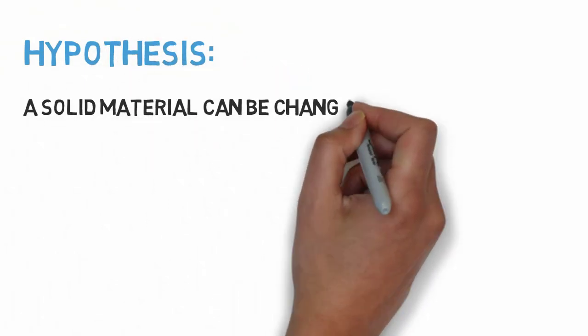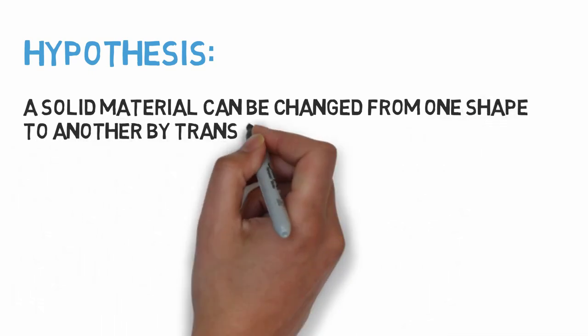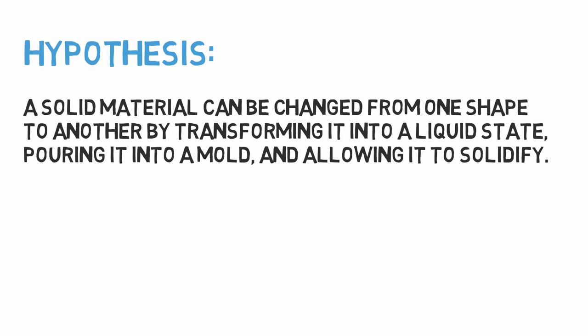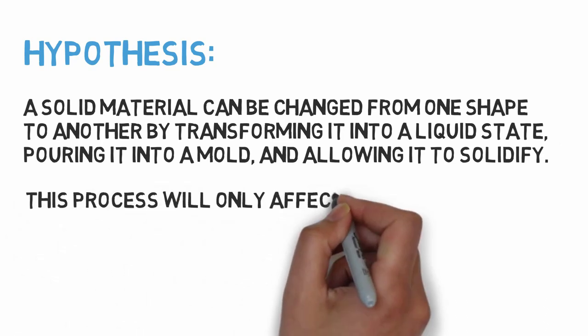A solid material can be changed from one shape to another by transforming it into a liquid state, pouring it into a mold, and allowing it to solidify. This process will only affect the shape of the material.